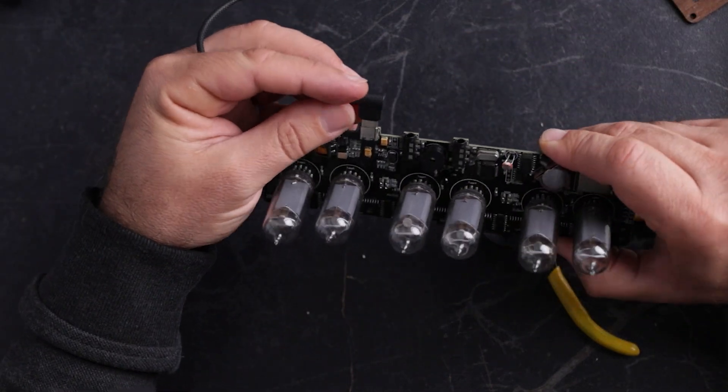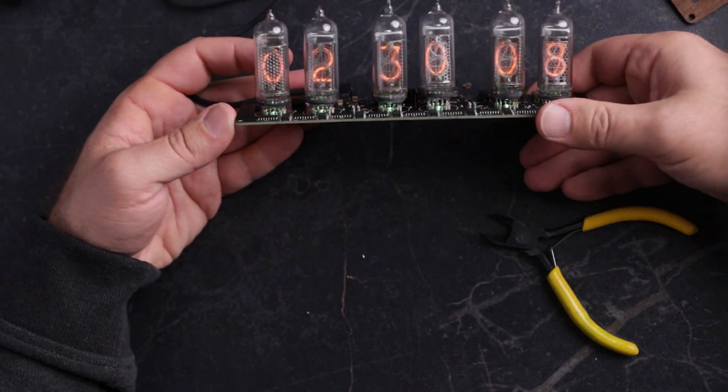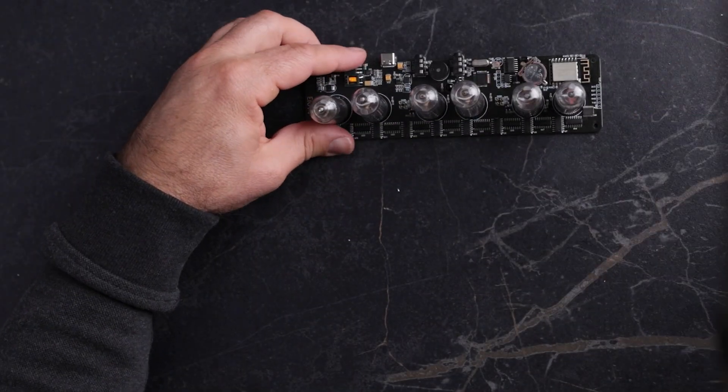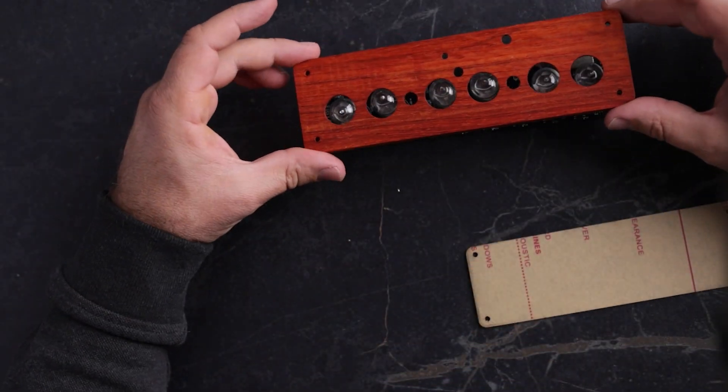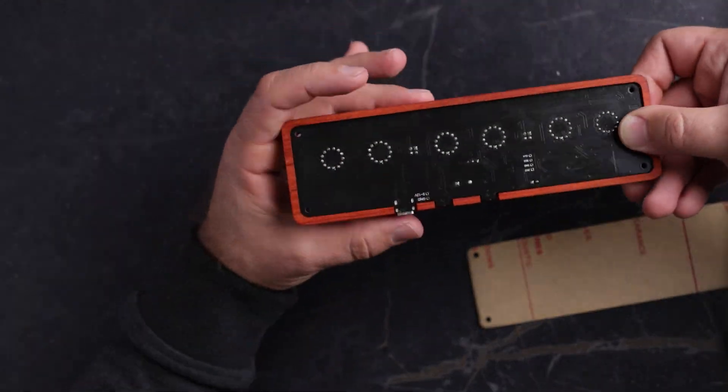We check how they work - all tubes light up and our Nixie clock is working properly right now. Then we put back the wooden case and straighten up all the tubes.